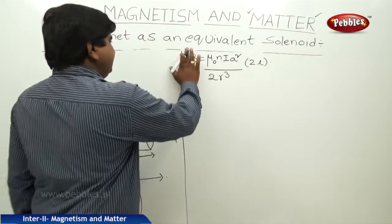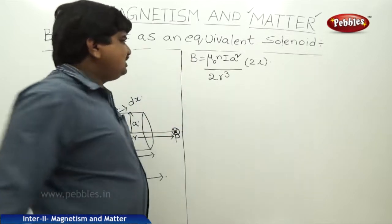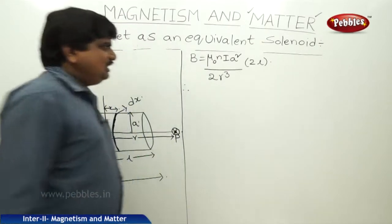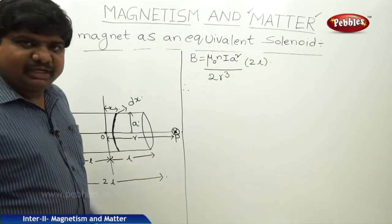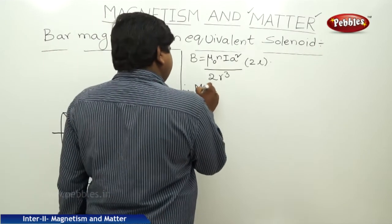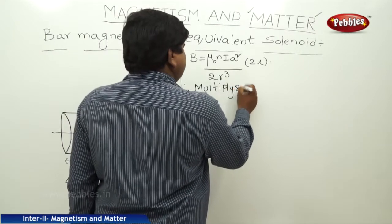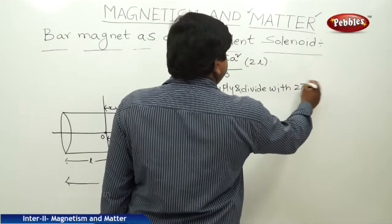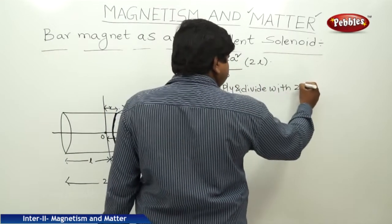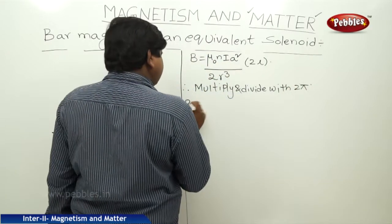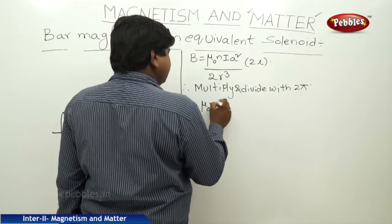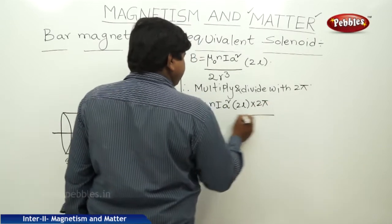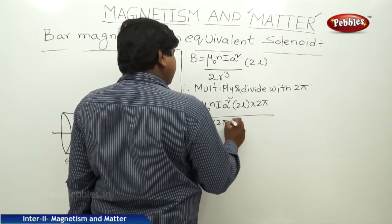So this is the equation we got after the integration. B is equal to mu naught NiA square by 2R cube into 2L. So I am multiplying with 2 pi and dividing with 2 pi this equation. So B is equal to mu naught NiA square 2L into 2 pi by 2 into 2 pi R cube.